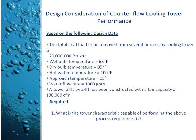The approach is 15 degrees Fahrenheit. From here, we can get our cold water temperature by adding the approach to the wet bulb temperature of 65 degrees Fahrenheit. Thus, our cold water temperature is equal to 80 degrees Fahrenheit. We are also given a water flow rate of 1,000 gallons per minute. The dimensions of the tower are 24 feet by 24 feet, and it has a fan capacity of 130,000 cubic feet per minute. We are required to get the tower characteristic capable of performing the above process requirements.